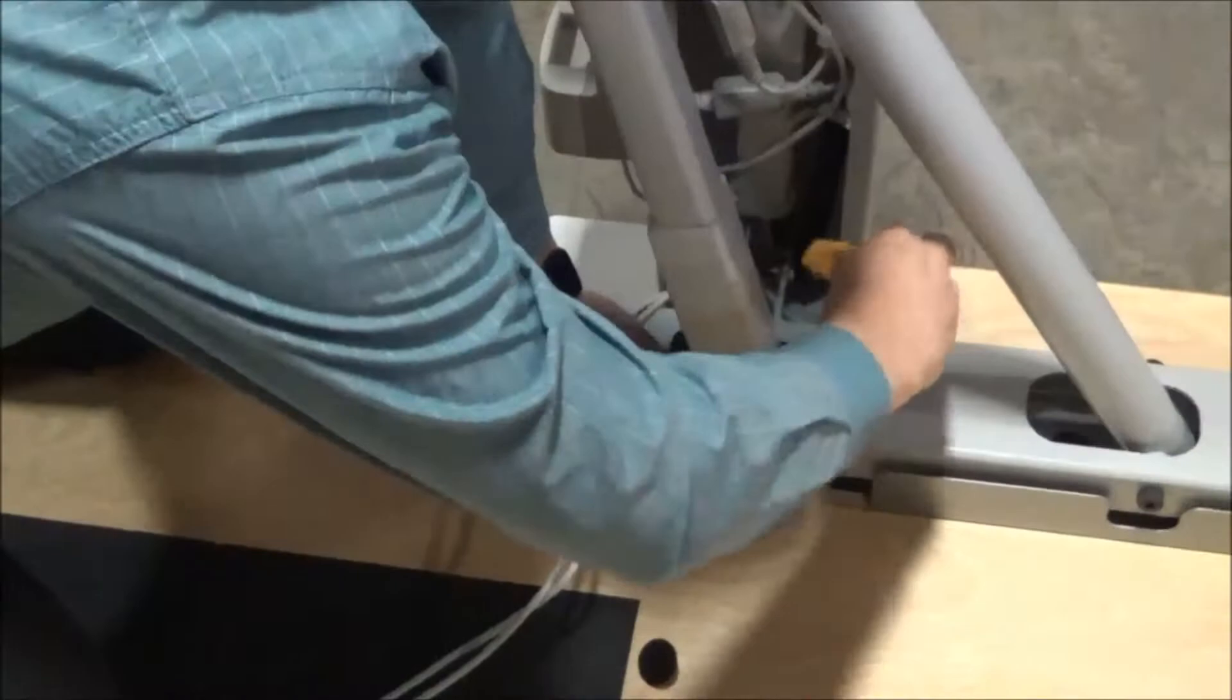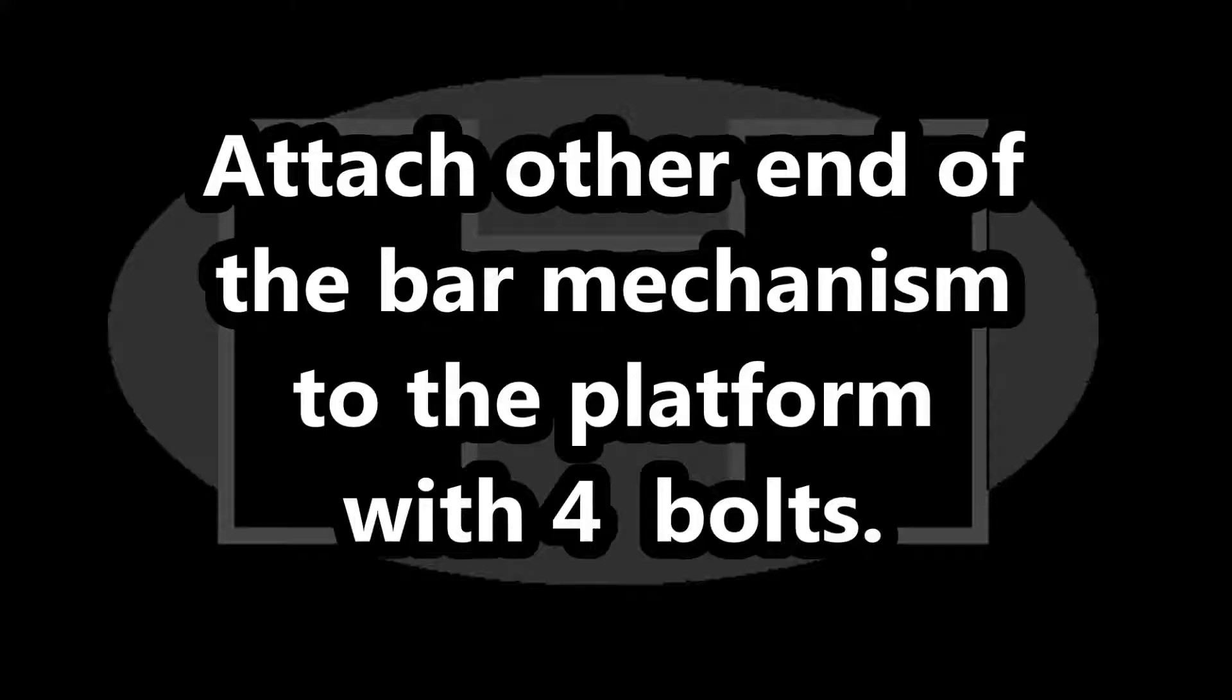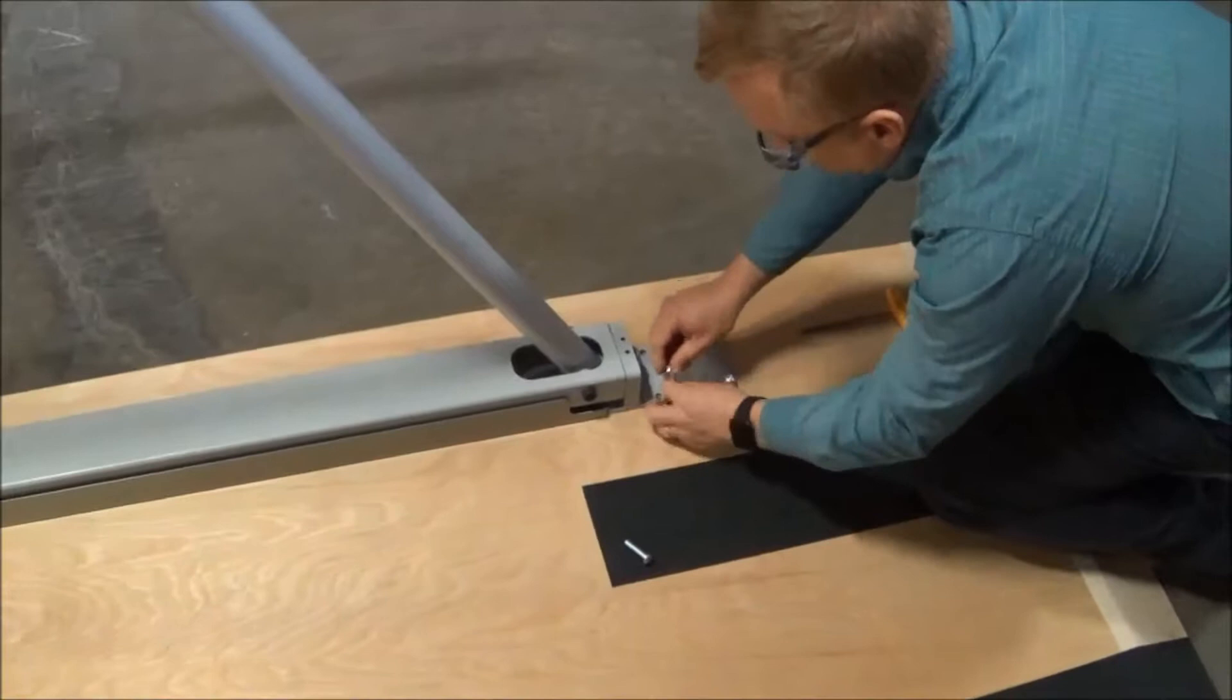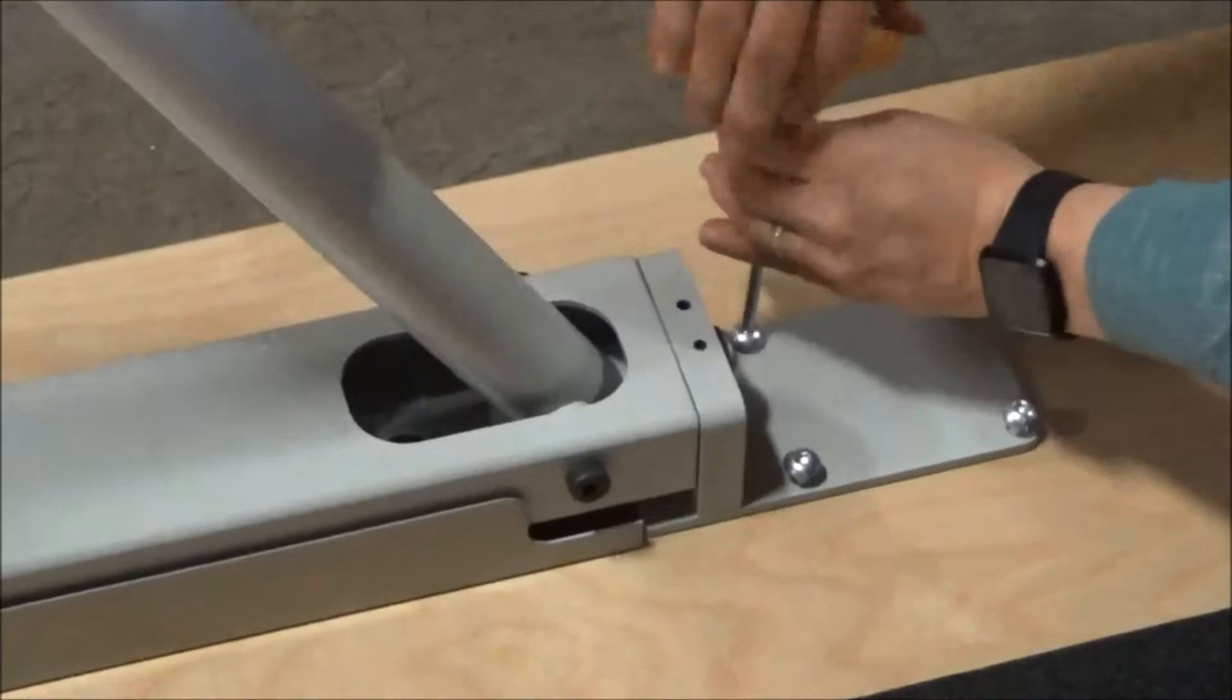Attach the other end of the bar mechanism to the platform with four bolts. Be sure to tighten the bolts firmly.